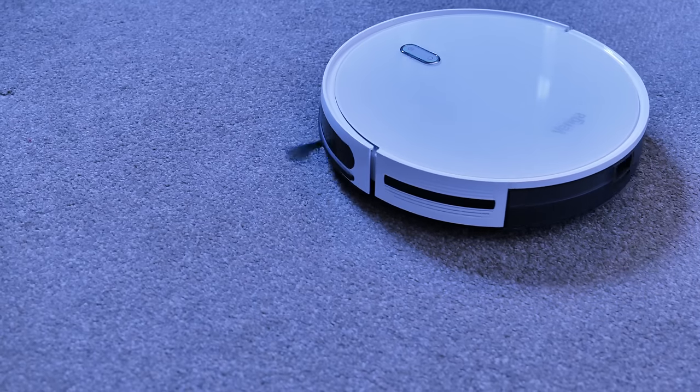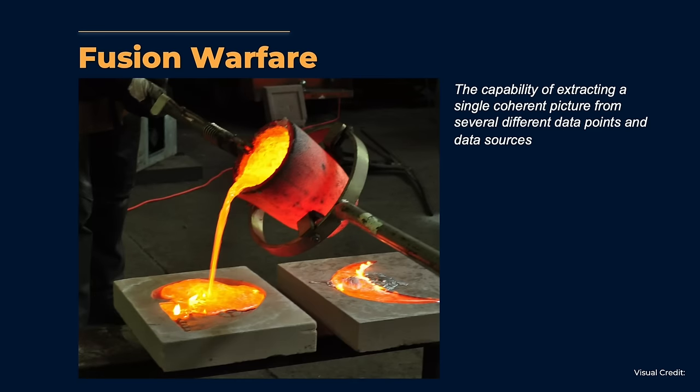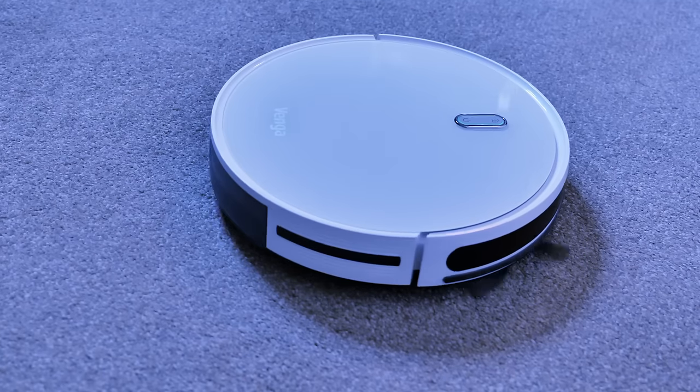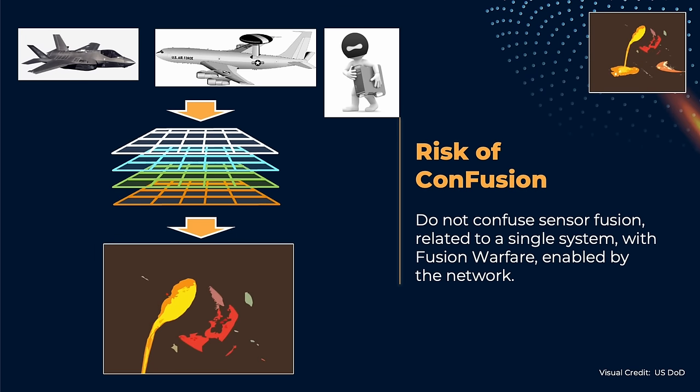Fusion warfare refers to the capability of extracting a single coherent picture from several different data points and sources. Given the large amounts of data described so far that cannot be processed manually by humans, some form of automated processing that turns isolated pieces of information into a single picture is necessary. It's important to note that fusion warfare and sensor fusion are two different things — sensor fusion is an older discipline used in civilian activities and existed before digital electronics.